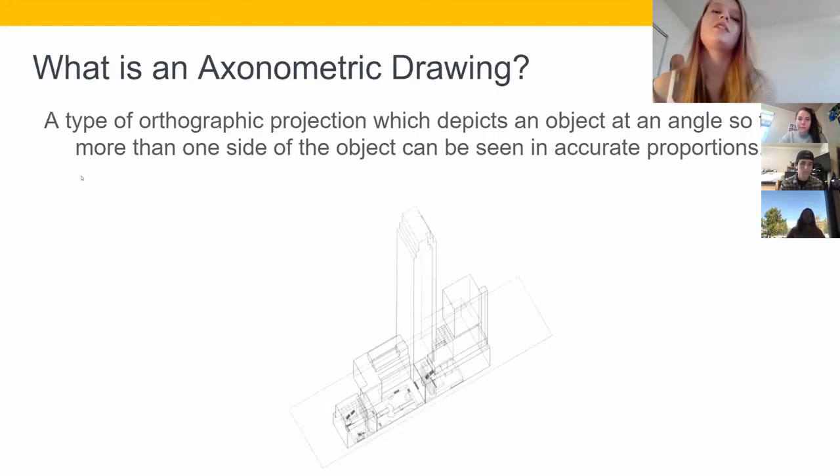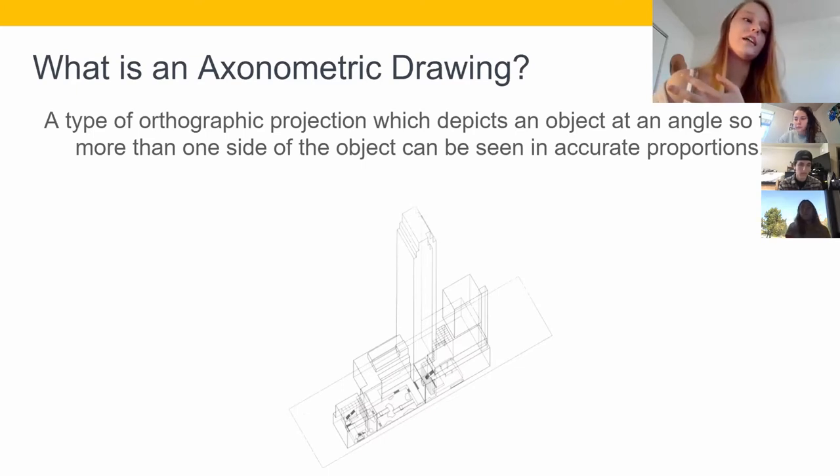So what exactly is an axonometric drawing? It's a type of orthographic projection which depicts an object at an angle so that more than one side of the object can be seen in accurate proportions. We draw an axon because it allows a 3D view that's easily measurable and it is not skewed in any way.